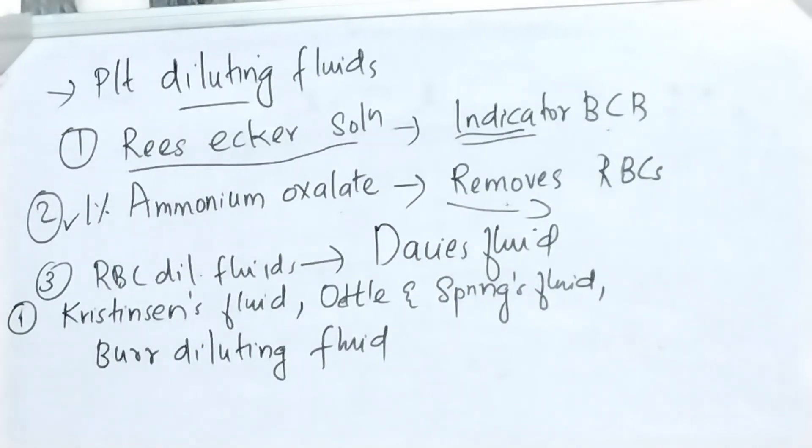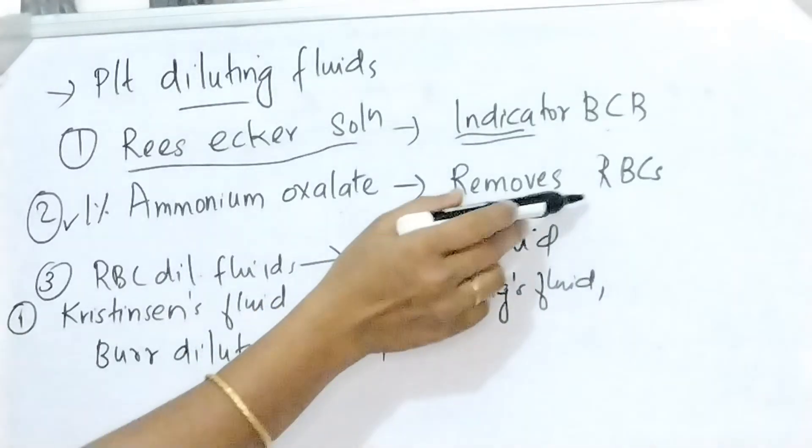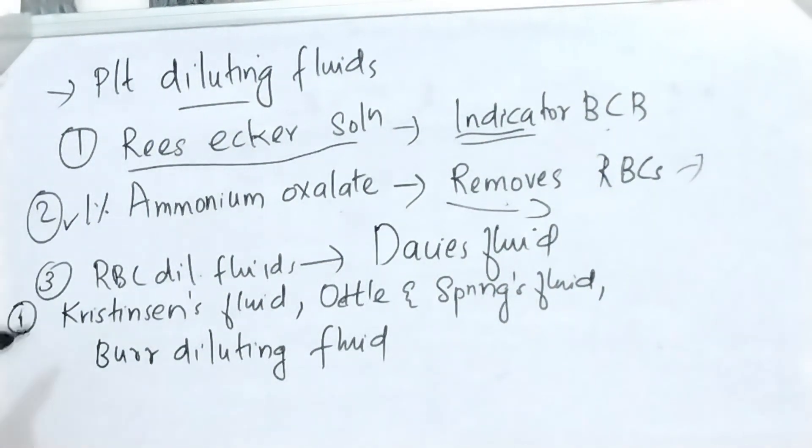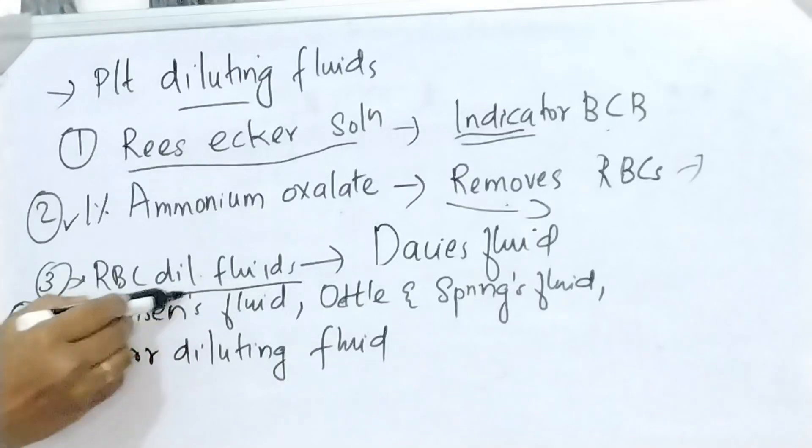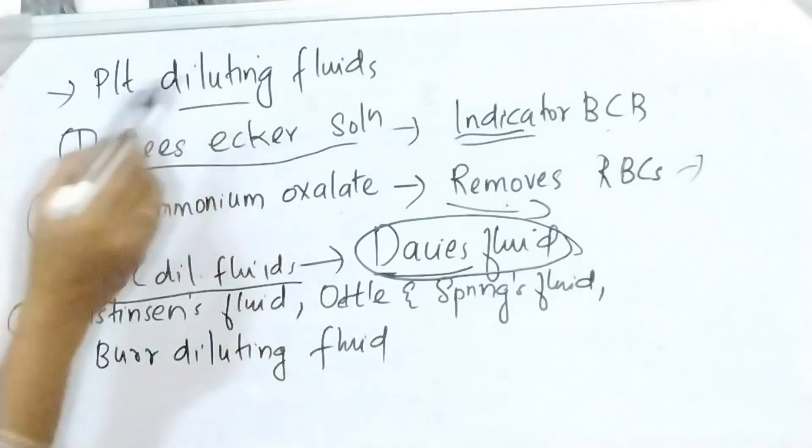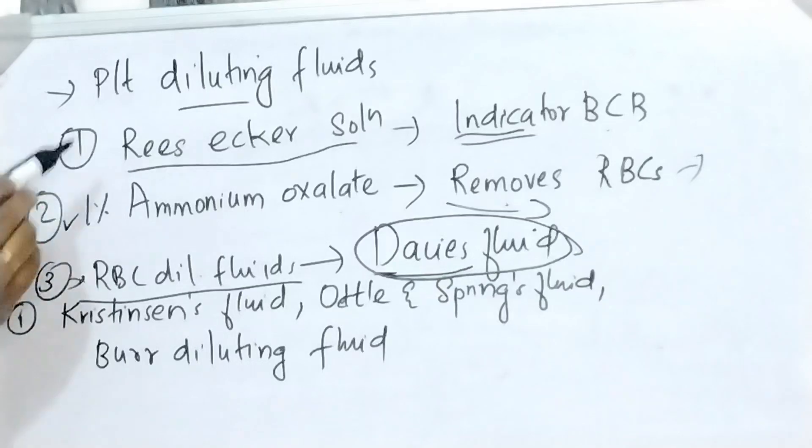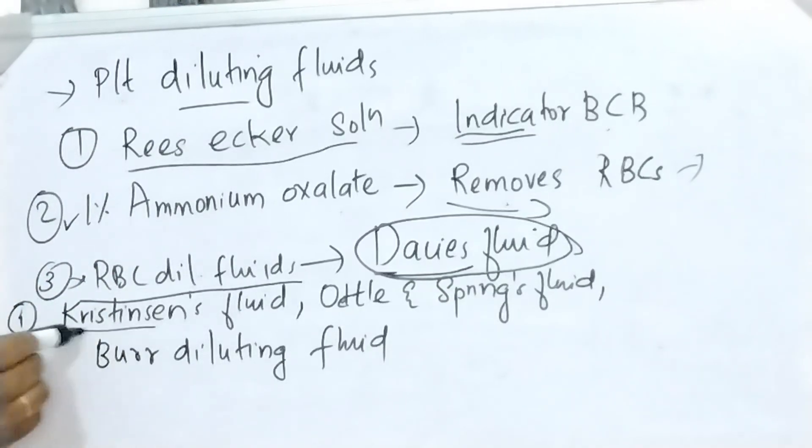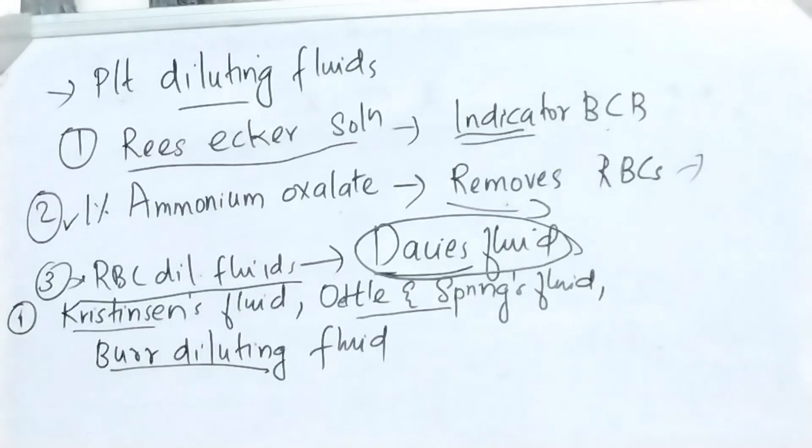Then 1% ammonium oxalate also can be used which removes RBCs in the sample. But a drawback of this diluting fluid is that RBC debris may be mistaken as platelets. Dacie's fluid, it is an RBC diluting fluid which can also be used for platelet count. Other diluting fluids for platelet counting are Christensen's fluid, Ettl and Spring's fluid and Burr diluting fluid.